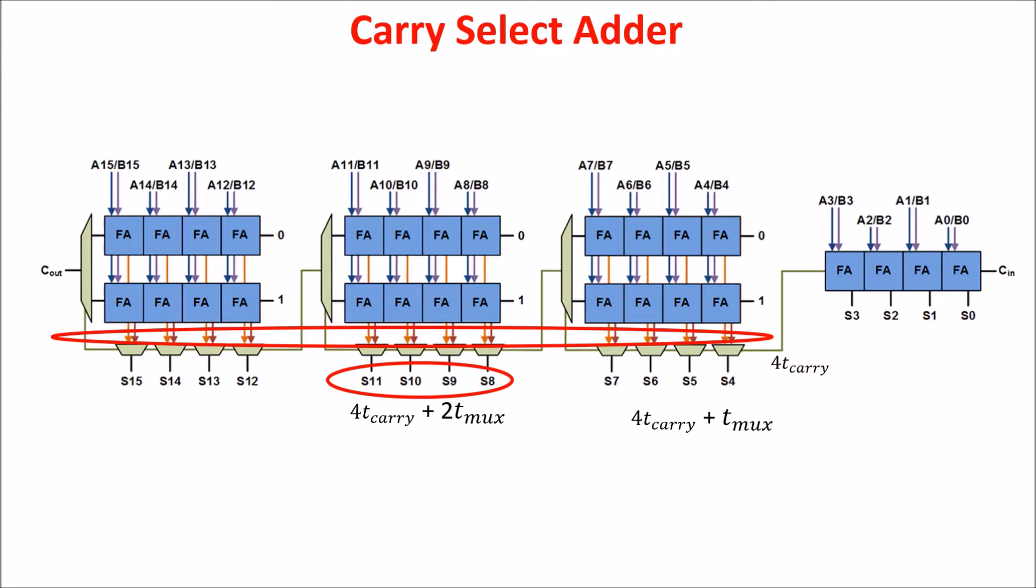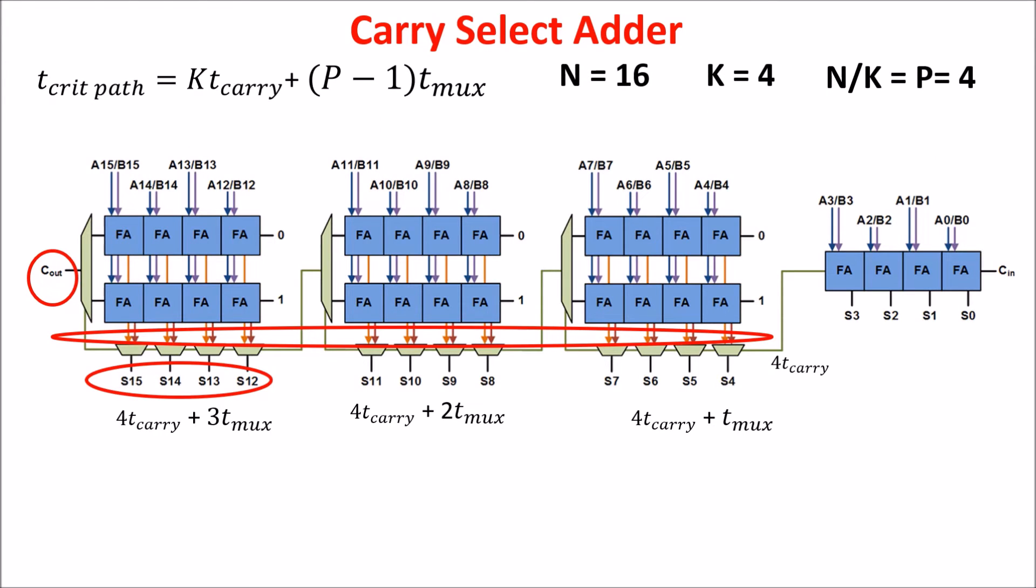So in general, we say the total delay is KT-carry plus (P minus 1)T-mux, where K is the number of bits of a block and N is the total number of bits. So P equals N over K is the number of blocks.